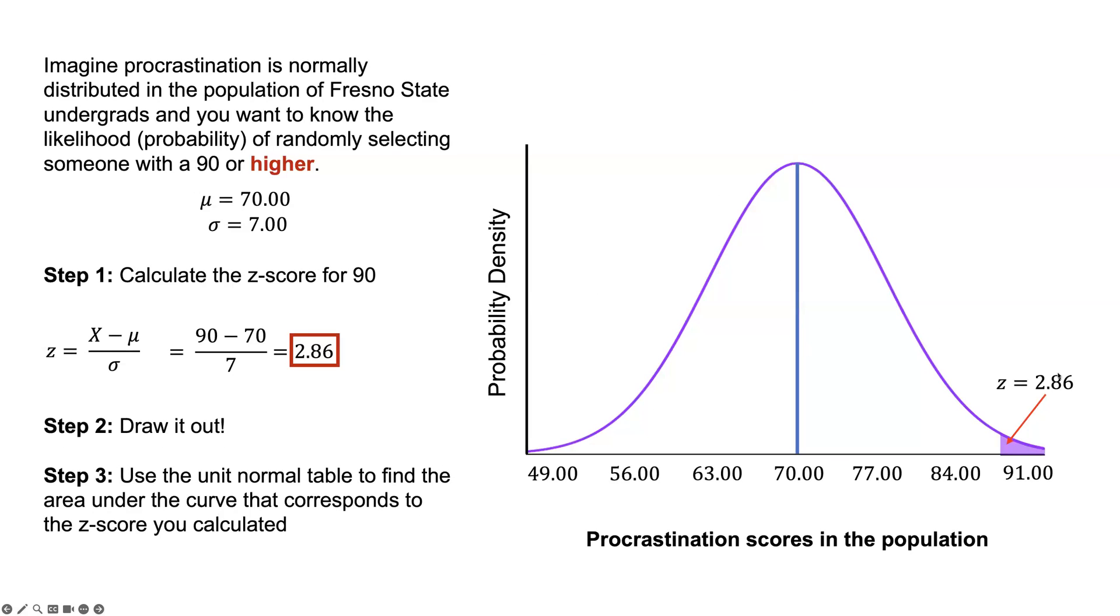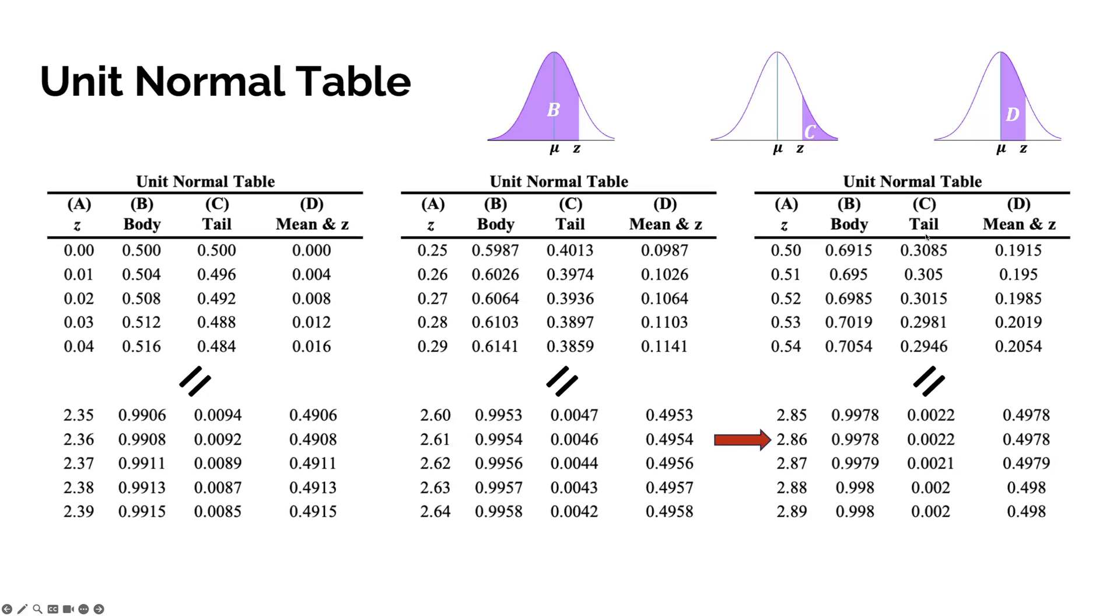Now imagine we're looking for 90 or higher. It changes the direction we're looking in our unit normal table. It helps to draw this out and visualize that you're just looking for that small amount. We're looking for the same z-score, but now we're looking in the tail, which is right there. If you add the body and tail together, you get 100%, or 1, since we're looking at proportions. The answer would be 0.0022, or 0.22%.